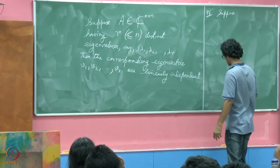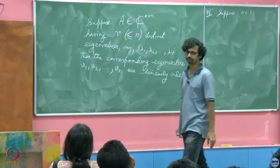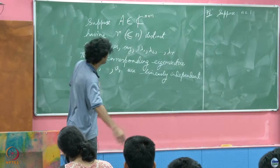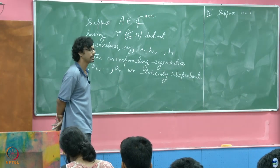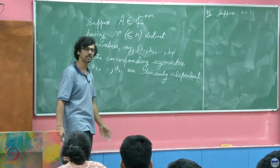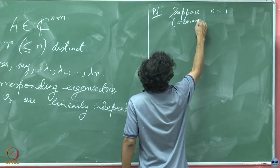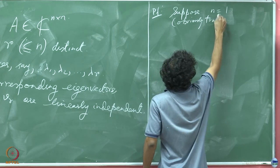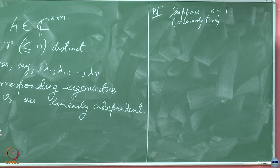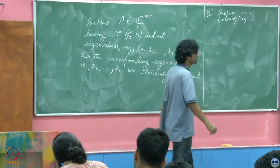Suppose n equals 1, well it is trivial. It is just a scalar, you know what its eigenvalue is, it is the number itself. A scalar operator is just a scaling, a multiplication. So any non-zero number in the field is an eigenvector, so obviously any non-zero vector is linearly independent. Obviously true.